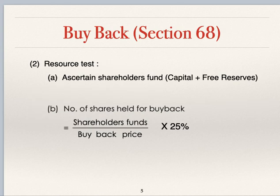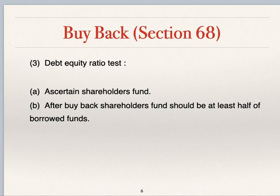The second test is the resource test. As per this test, find out shareholders' funds, which is capital plus free reserves. Then: shareholders' funds divided by buyback price, multiplied by 25%, gives the number of shares for buyback as per the resource test.